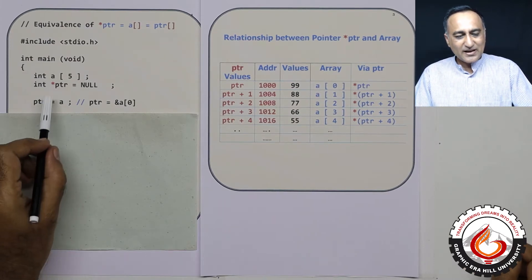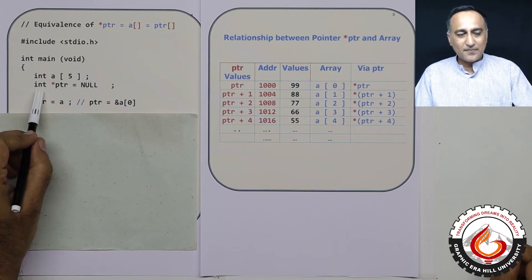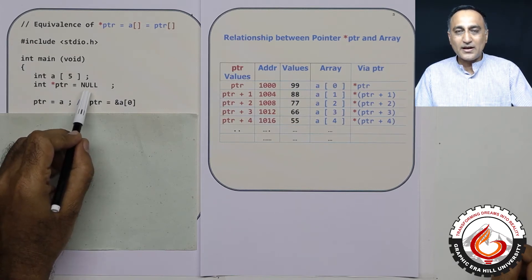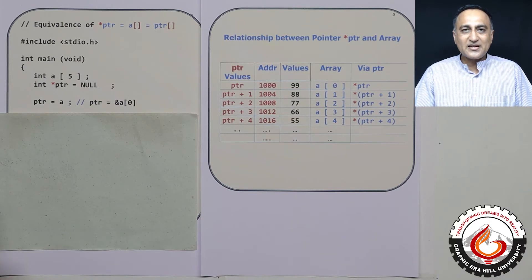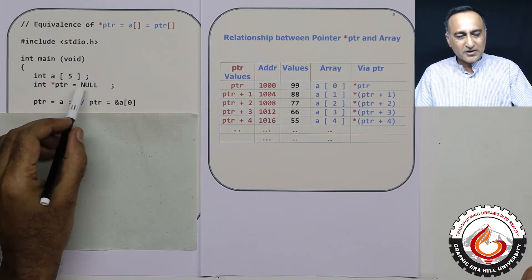Now I have declared a pointer to an integer type of data and given it the initial value null, because I want to play safe and see that the pointer does not point to some dangerous location in the memory. That's why I have made pointer equal to null.